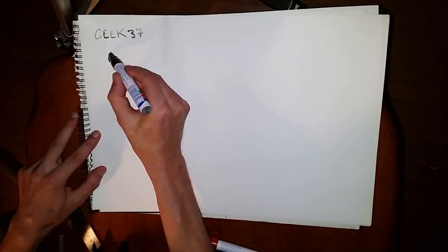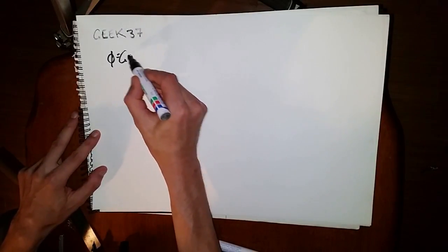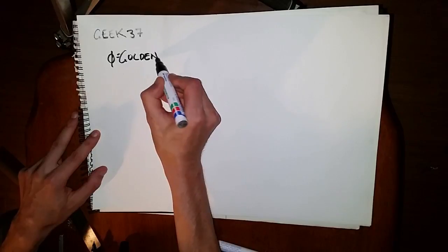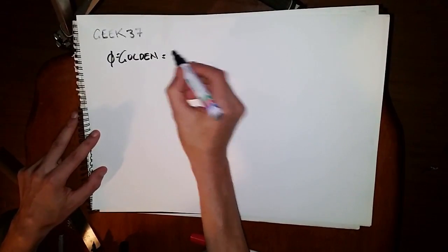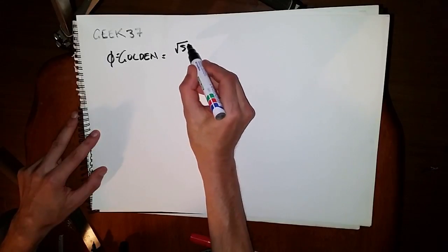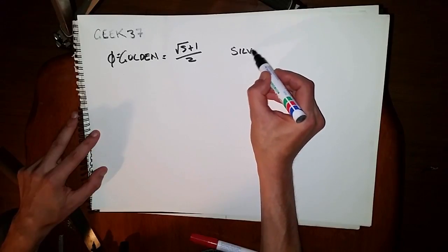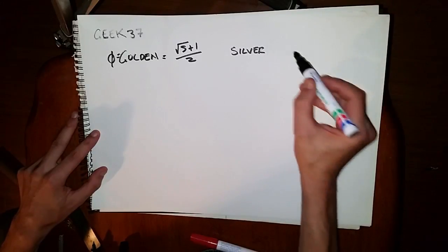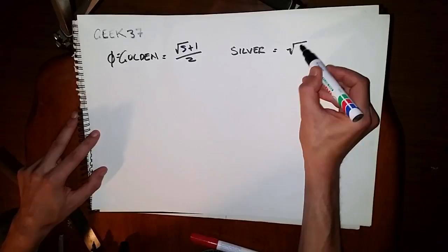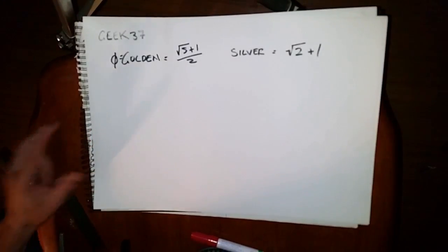So we have the Golden Ratio, φ Golden Ratio, 1.61803, but one way to express it is the square root of 5 plus 1 over 2. We also have the Silver Ratio, and that is the square root of 2 plus 1.